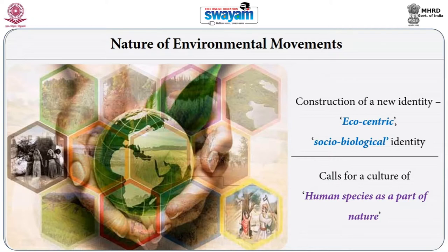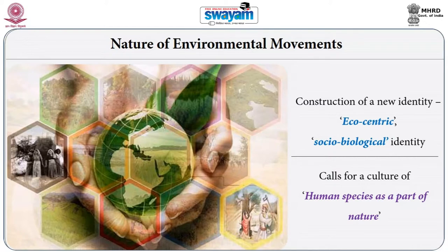The central identity that these environmental movements put forth is a new kind of identity where human beings should not be considered a superior species. What is highlighted is sharing the planet Earth. The ecosystem is a system where human beings are just one element; human beings should not control or establish dominance over the ecosystem.